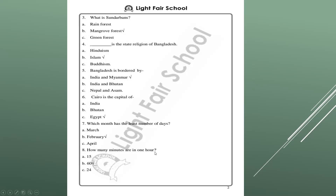Number eight: how many minutes are there in one hour? 50? No. 24? No. 60 is the correct answer — 60 minutes equals one hour. So option B is correct. Put your tick mark there and go to our next slide.